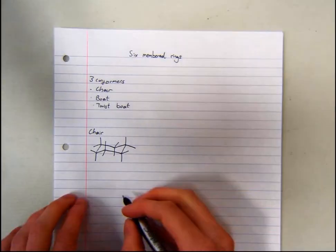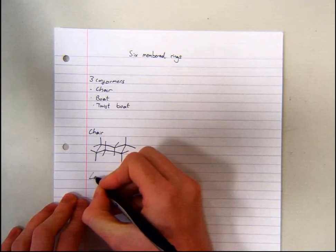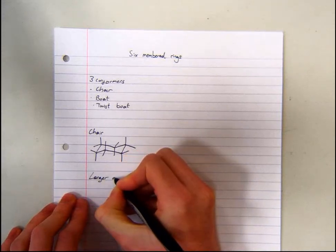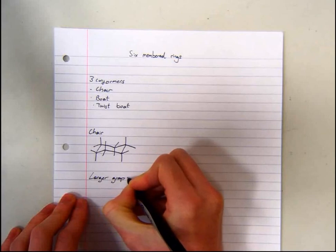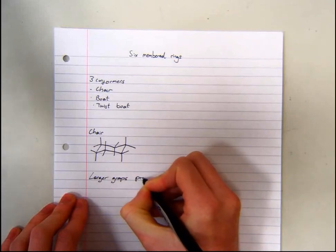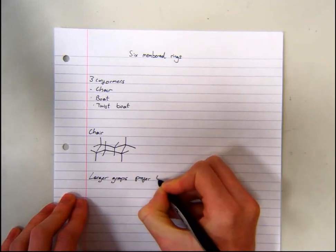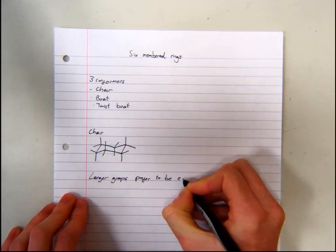In general, larger groups prefer to be equatorial.